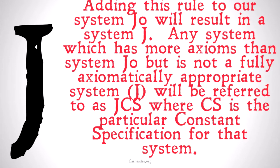Adding this rule to our system J0 will result in system J. Any system which has more axioms than system J0 but is not fully axiomatically appropriate — like system J — will be referred to as JCS, or J followed by whatever we name our constant specification, where CS is a particular constant specification that is not fully axiomatically appropriate but is not completely empty as in system J0.